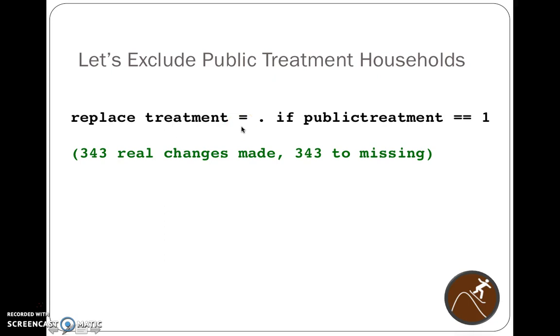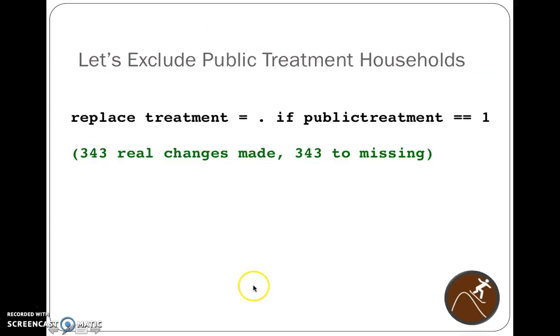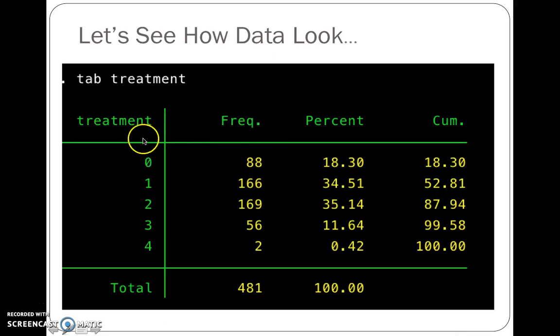I'm not going to get too much into how to code data on your end, but if you ever had to, this is just a little bit of information on how to do so. So now we can check to see how the data look. We type in tab and then treatment, and it shows that we have 481 of the roughly 800-some-odd people that were in the study. Because remember, we threw 343 out as missing, so they don't exist in this treatment variable set or treatment data set.